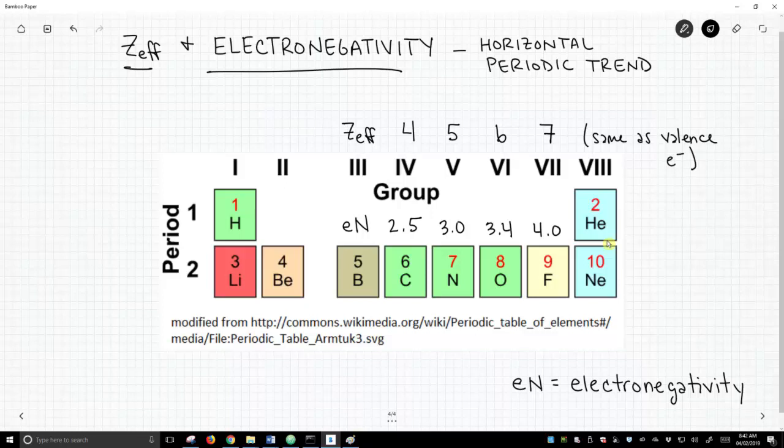So as you build up this effective nuclear charge in these elements, as we go across the periodic table, from carbon to fluorine, remember, effective nuclear charge is, in a sense, an attraction between the protons in the nucleus and the valence electrons.